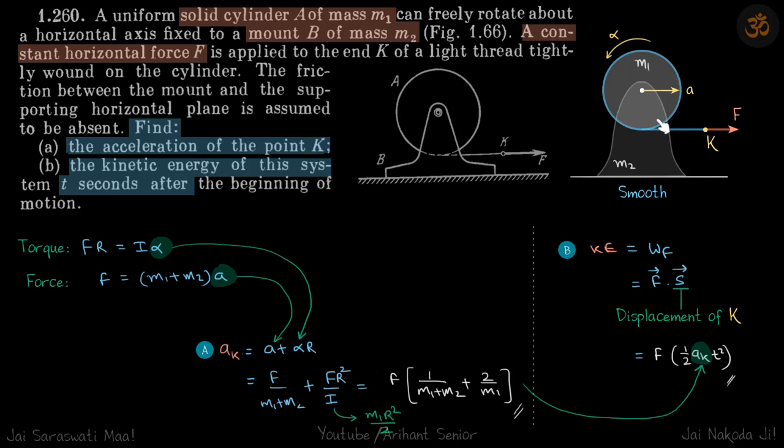Let's write both equations so that we can find the final acceleration of point K. Both the acceleration of the system and the rotation of the cylinder will contribute to the acceleration of K. The torque equation will be F·r = I·α, and force equation will be F = (m₁ + m₂)·a.